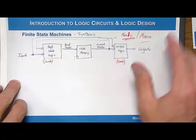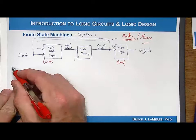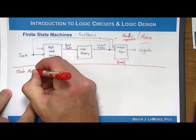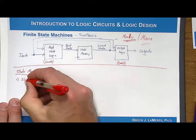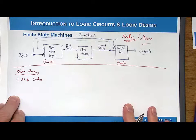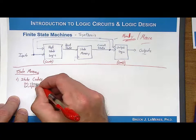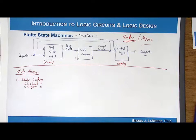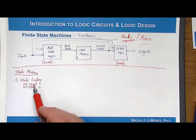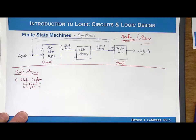Let's start synthesizing the state memory. The first thing we need to do is assign the state codes. We have two states in our example: W open and W closed. We need to assign them digital values, and it's arbitrary how we do it. For this one, we could say closed is zero and open is one. But notice that was arbitrary — I could have assigned closed to be one and open to be zero. So it's arbitrary how you assign these state codes, and there are different types of encoding approaches.